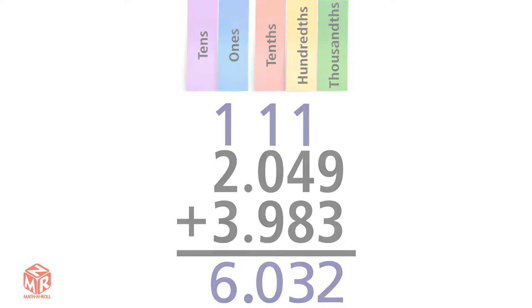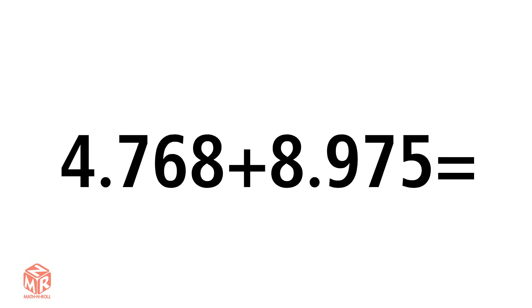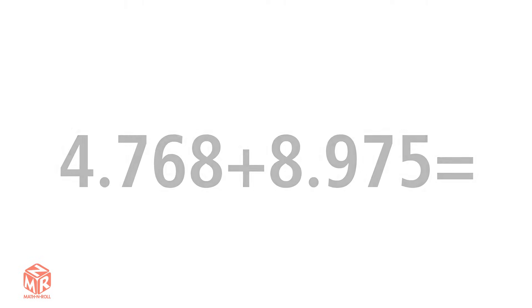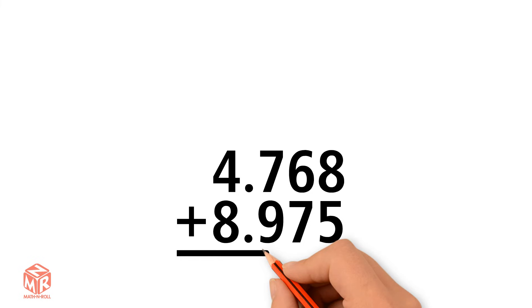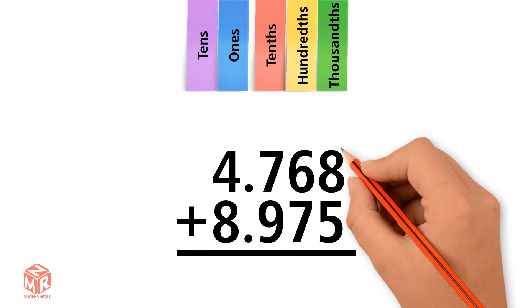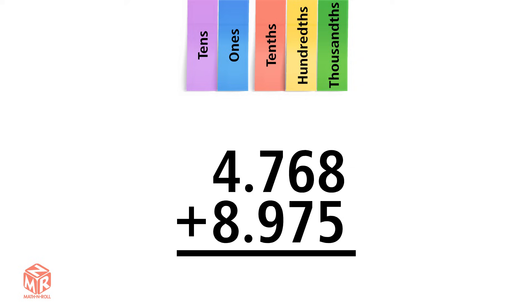Let's do another example: 4 and 768 thousandths plus 8 and 975 thousandths. We start by lining up the decimal points. 8 plus 5 equals 13. 13 is greater than 9, so we have to regroup. We're left with three thousandths that we put in the thousandths column and one extra hundredth.